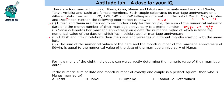Hitesh and Edwin celebrate their marriage anniversaries in different months starting with the same letter — that gives us March and May. The sum of the numerical values of the date and month of Edwin's anniversary equals the numerical value of the date of Manas's anniversary. Edwin is in March or May. If March: 7 plus 3 is 10, 15, 17, 27 — none of those work. So Edwin must be in May. If we see 7 plus 5, that gives 12, which fits. So Edwin was married on 7th May, and the marriage anniversary date of Manas is 12.